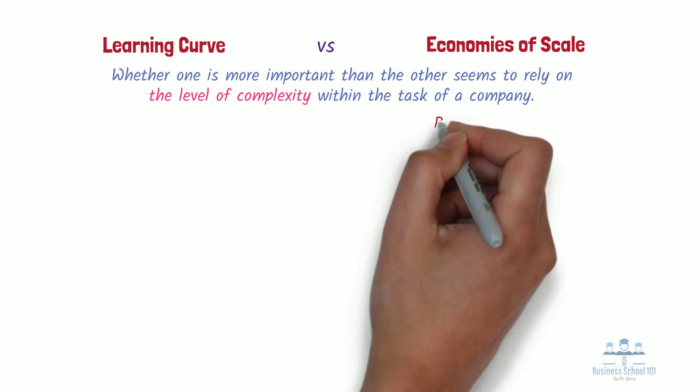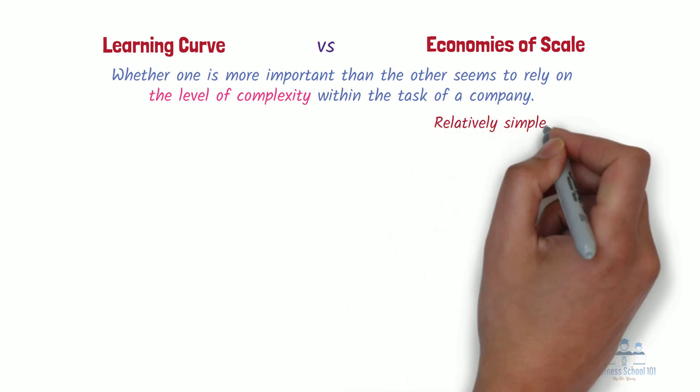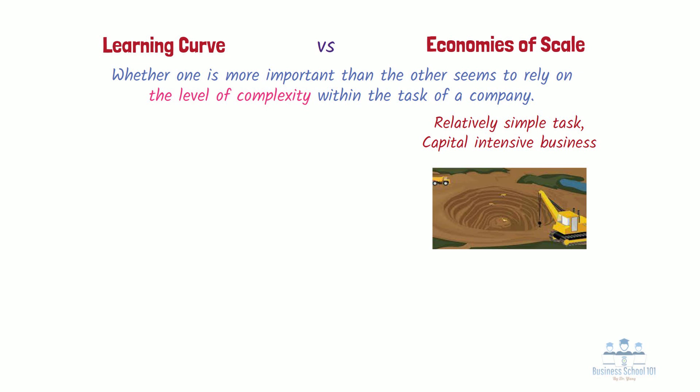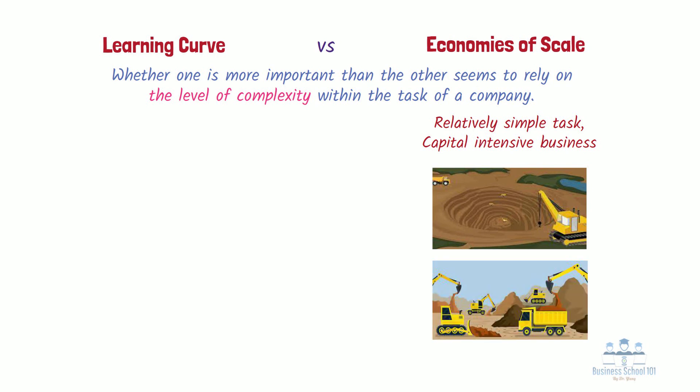If something is simple but takes a lot of capital to be done, economies of scale will take place. An example of a simple, capital-intensive business would be the operation of a strip mine. Once a business has the plot of land in which it wants to mine, all it needs is more equipment and relatively easily trained operators for that equipment. The more equipment, the more the company can carry out of the mine, and the cheaper each pound of rock is to take out.